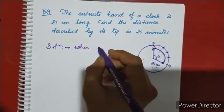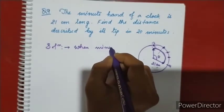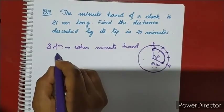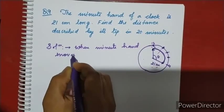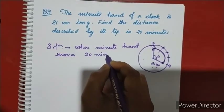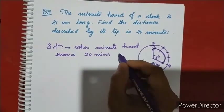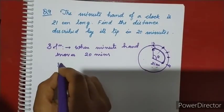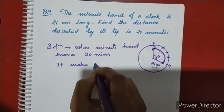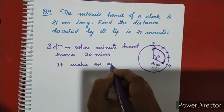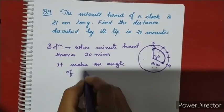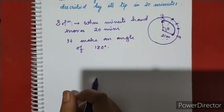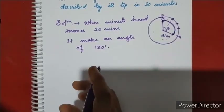One minute hand moves in 20 minutes. In 60 minutes it makes a full 360 degrees, so in 20 minutes it makes an angle of 120 degrees.